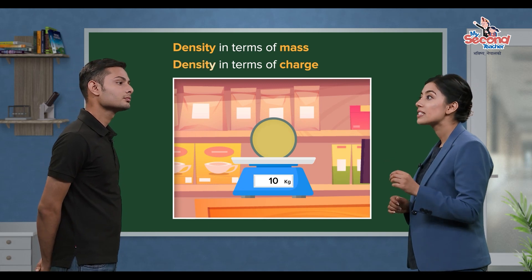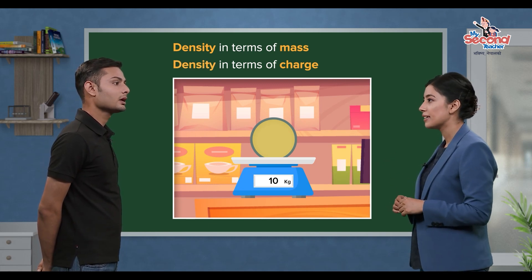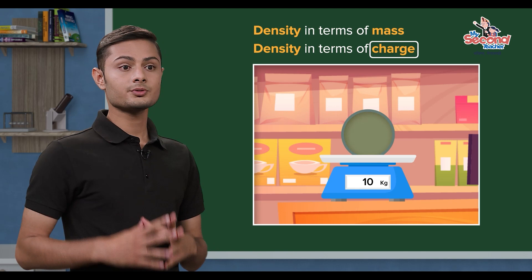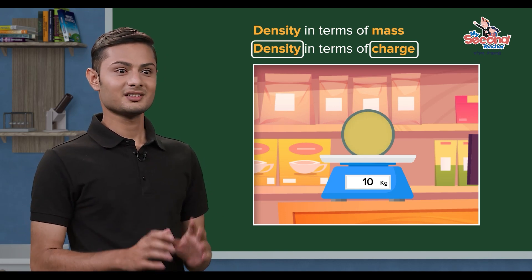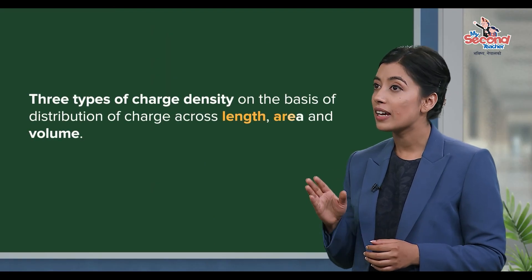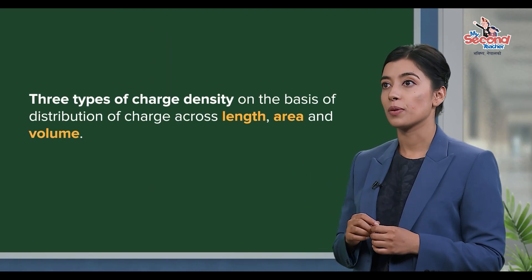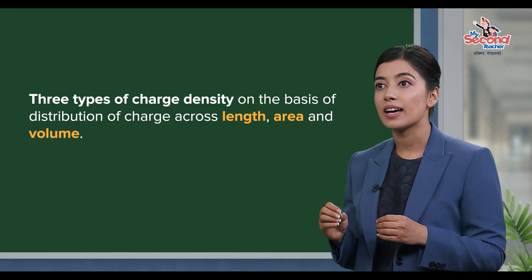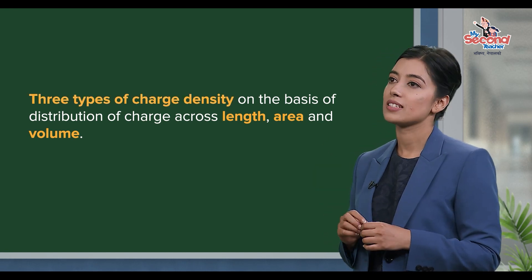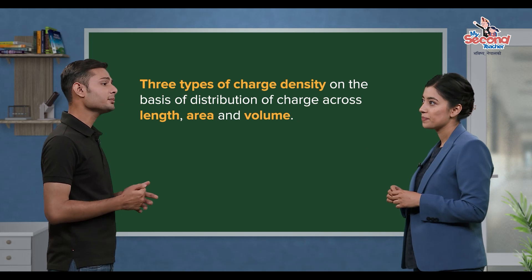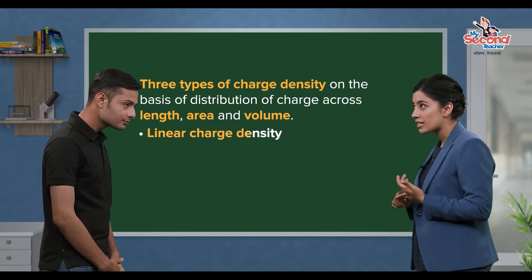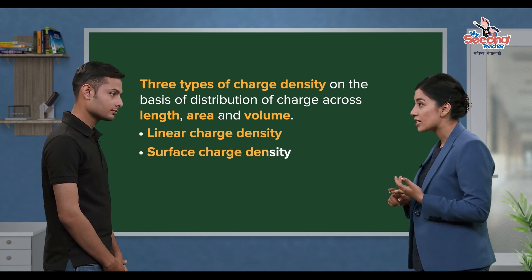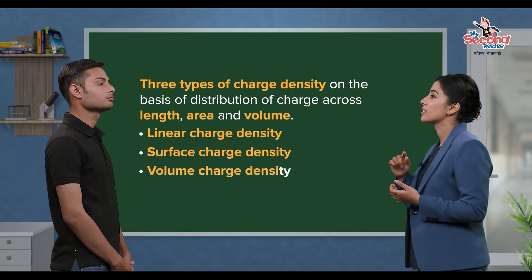Charge in terms of density. The object's length, area, and volume will distribute the amount of charge in terms of charge density. That means the amount of charge density is different for each. So: linear charge density, surface charge density, and volume charge density.